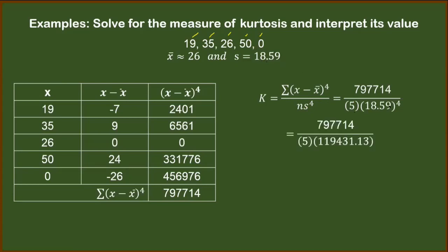And then s here is 18.59. Get the fourth power of that number. We have 119,431.13. Multiply that to 5. You'll arrive with 597,155.65. And then finally, dividing those two numbers, the coefficient or the measure of kurtosis is 1.34.